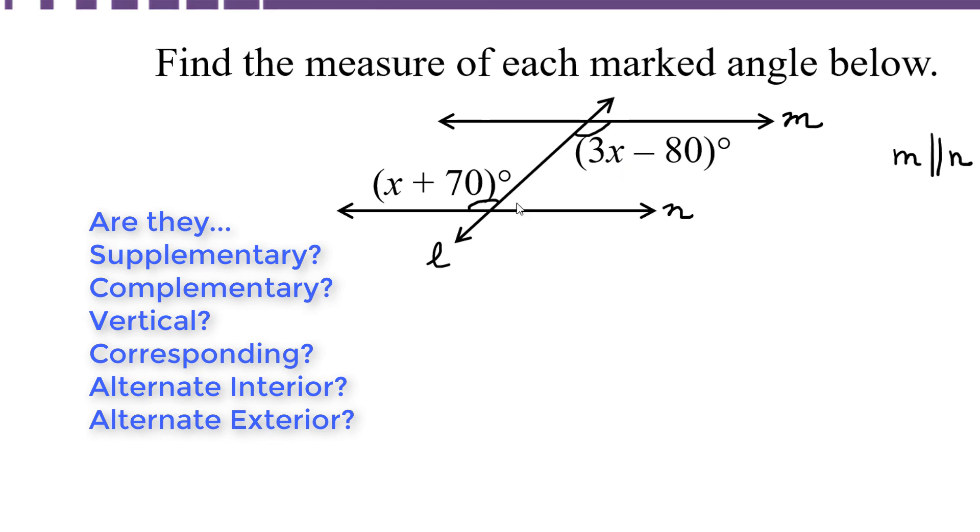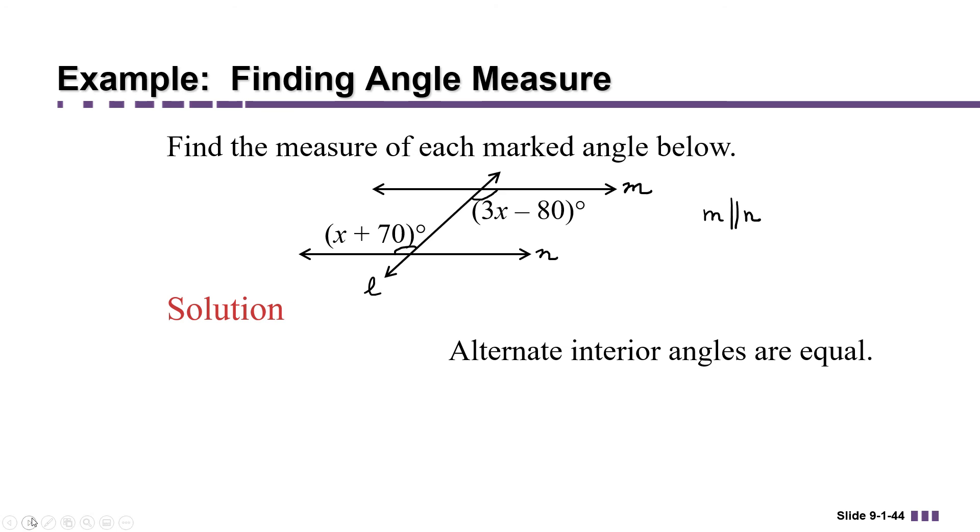And it has to do with their relative position to both the transversal and the parallel lines. Notice that both of the angles are between the parallel lines, in other words they're on the interior of the pair of parallel lines. And they're on opposite sides of the transversal, also called alternate sides. So these are alternate interior angles. Alternate interior angles are equal, so that gives us an equation we can solve to find x.